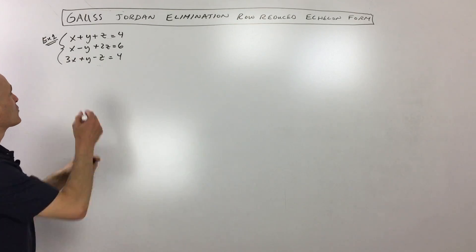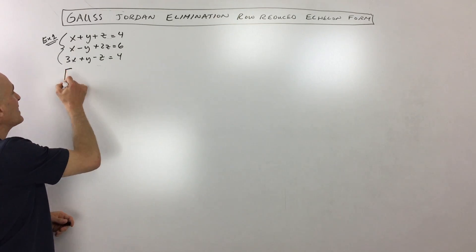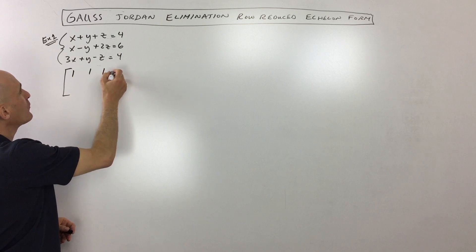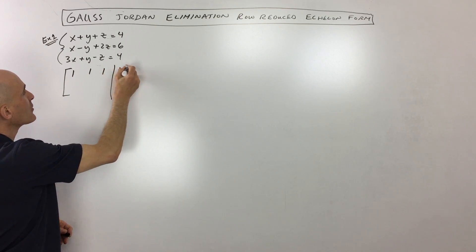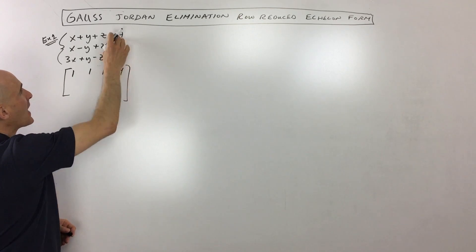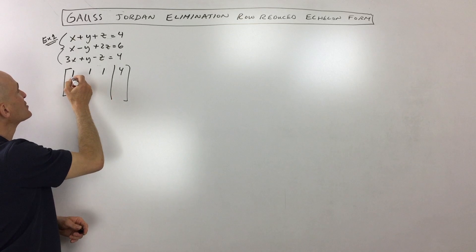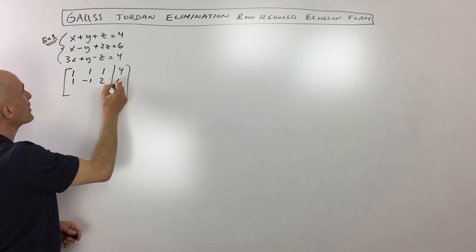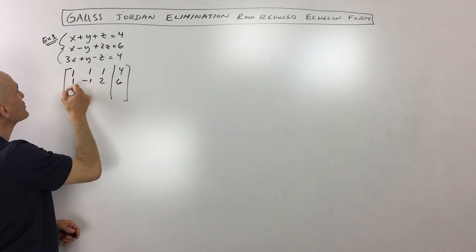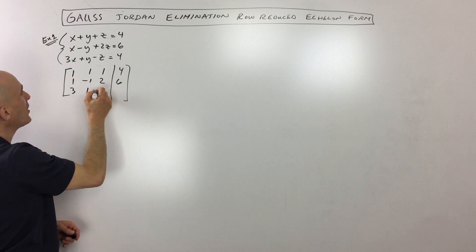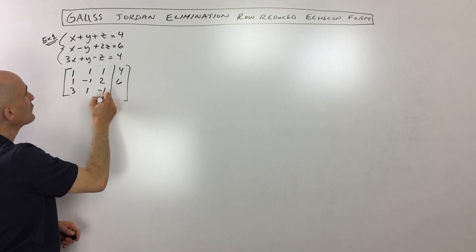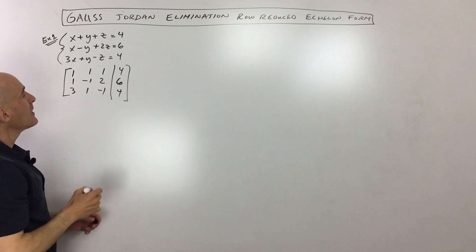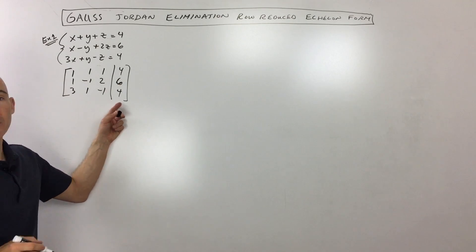But now what we're doing is we're going to write this as an augmented matrix. What that means is I'm just using the coefficients — the numbers in front of the variables — but I'm also adding on these solutions on the right. So I'm just writing down the coefficients: 3x is 3, 1y is 1, negative 1z is negative 1, and the answer is 4. And this is our augmented matrix.